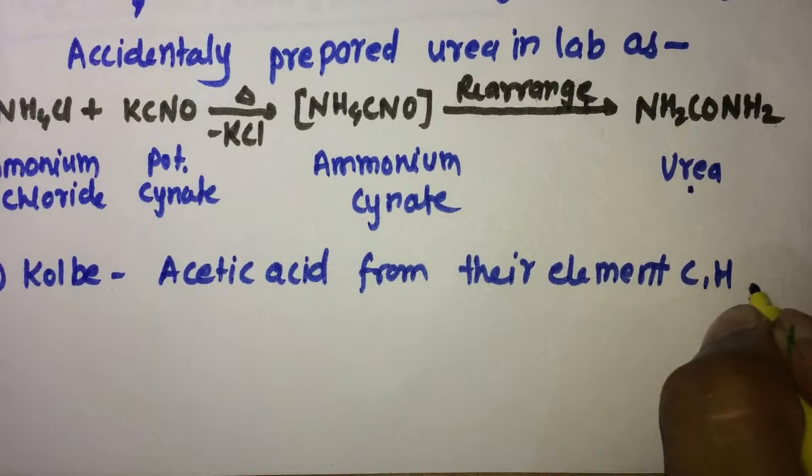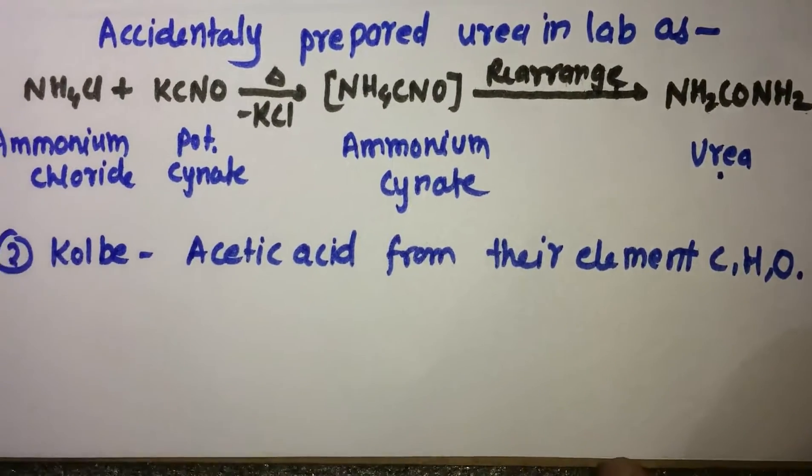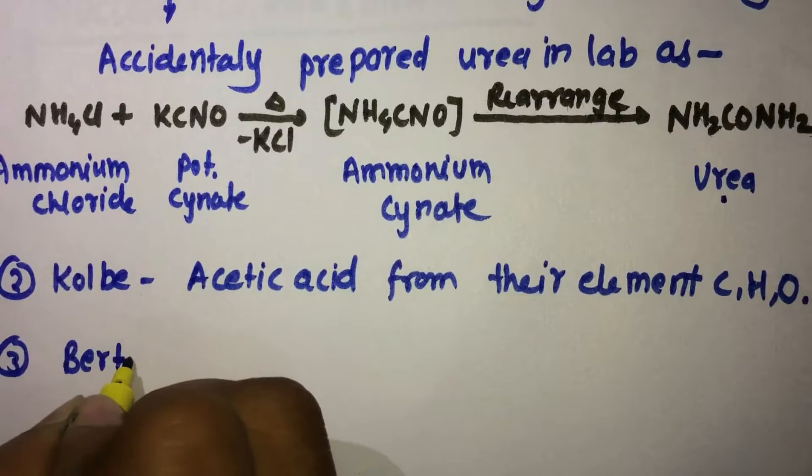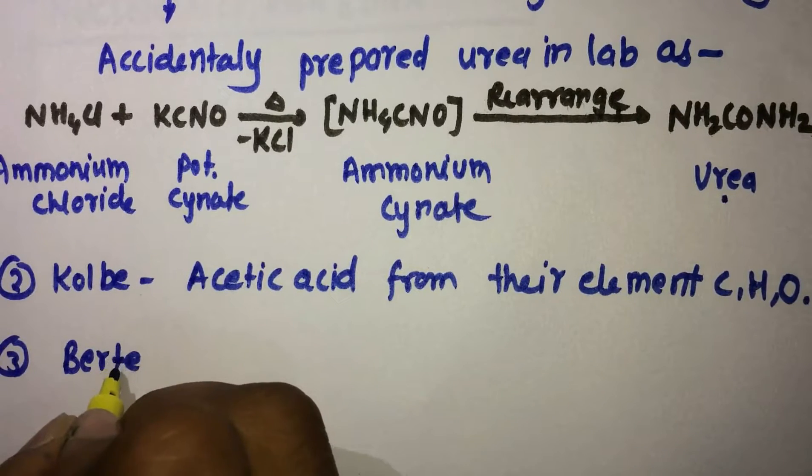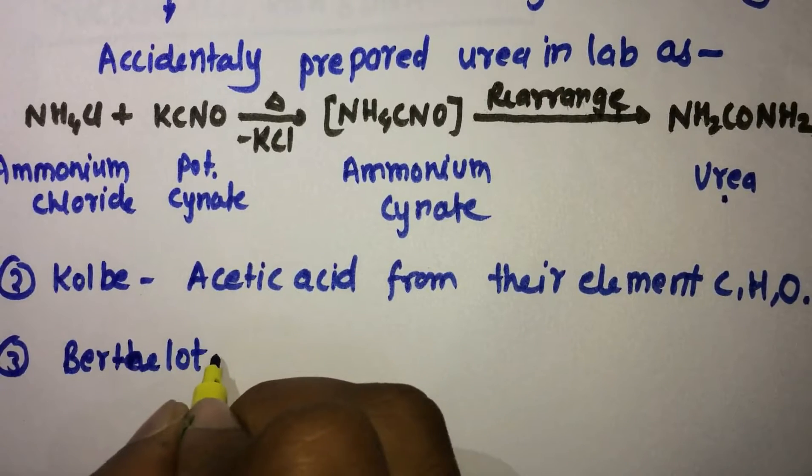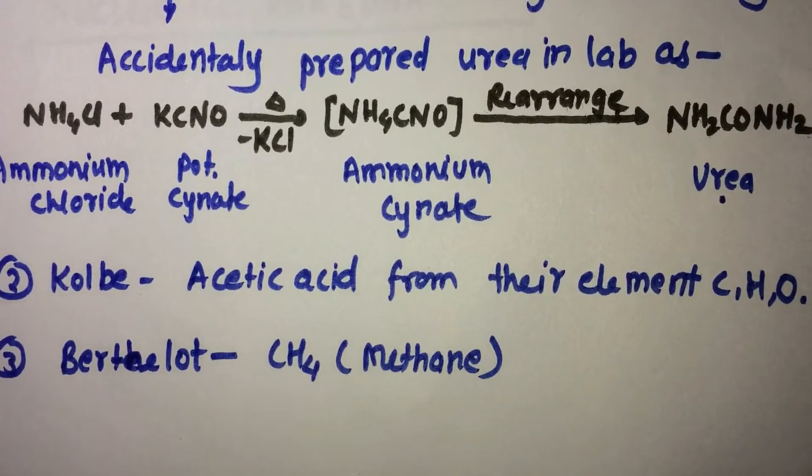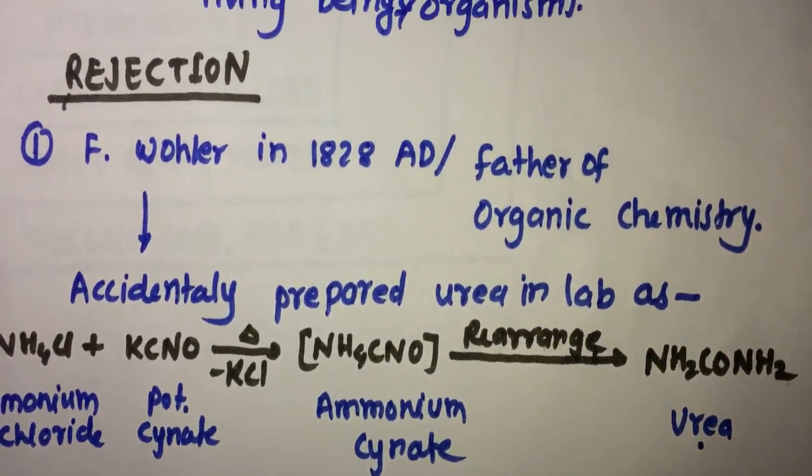The second organic compound was acetic acid synthesized by Kolbe from methyl, carbon, hydrogen and oxygen. And finally, the third organic compound was methane synthesized by Berthelot.